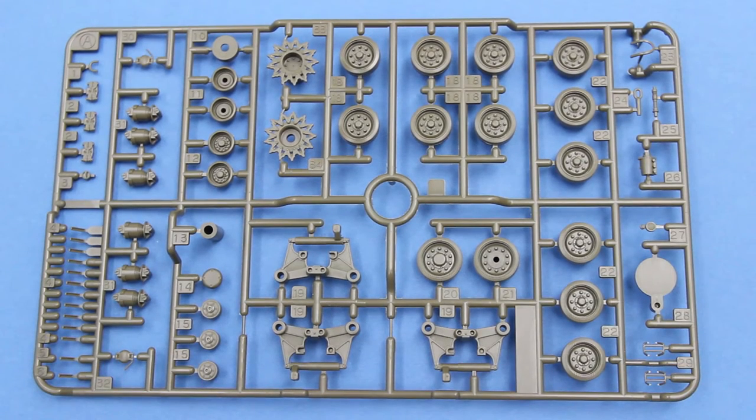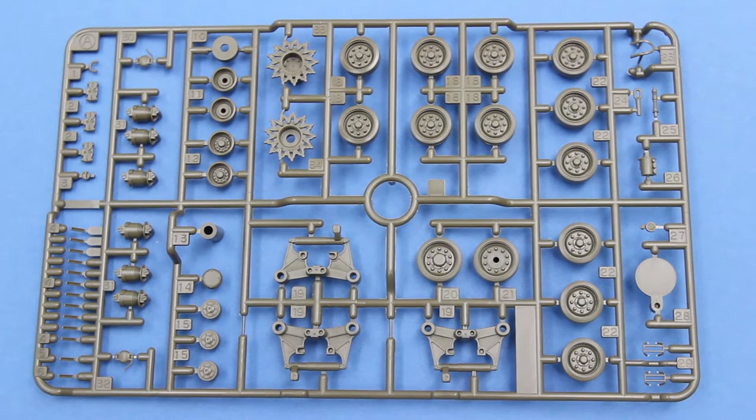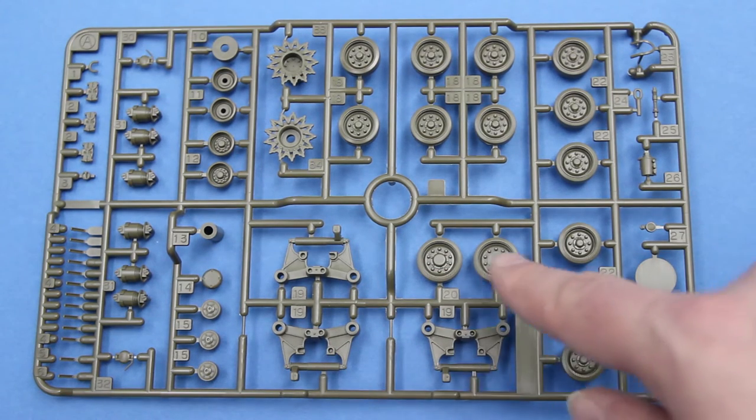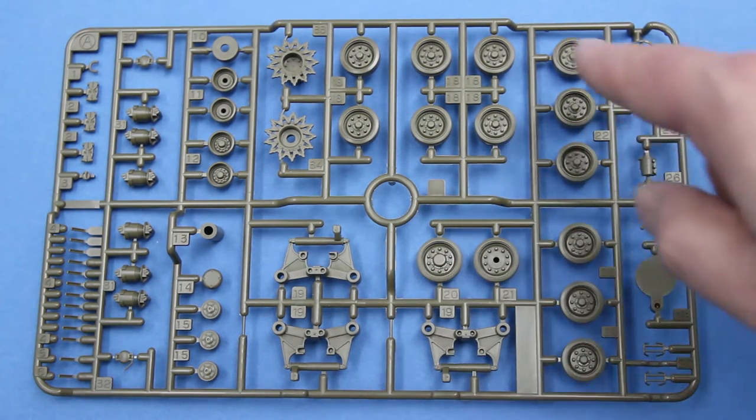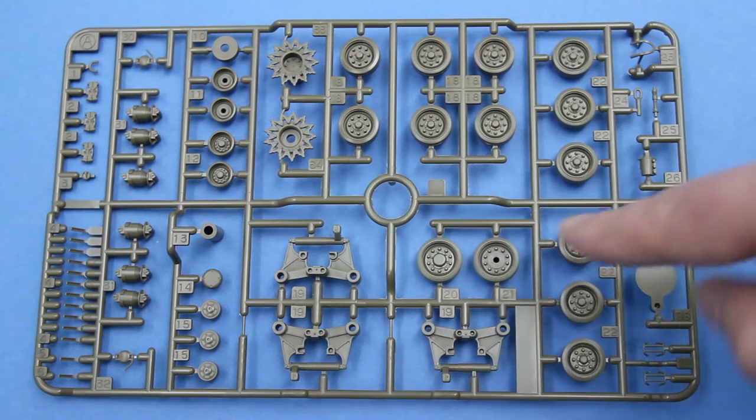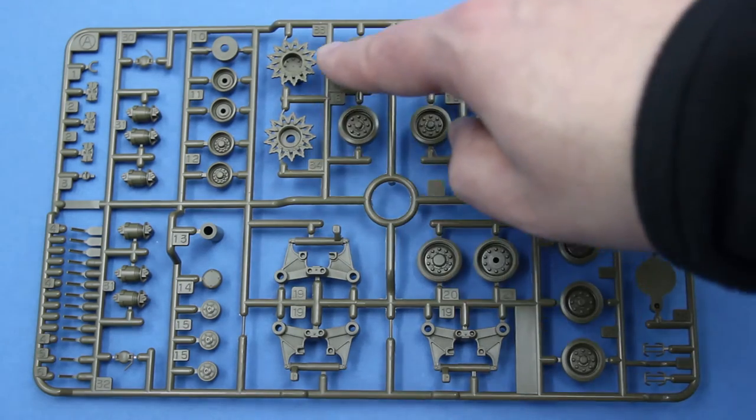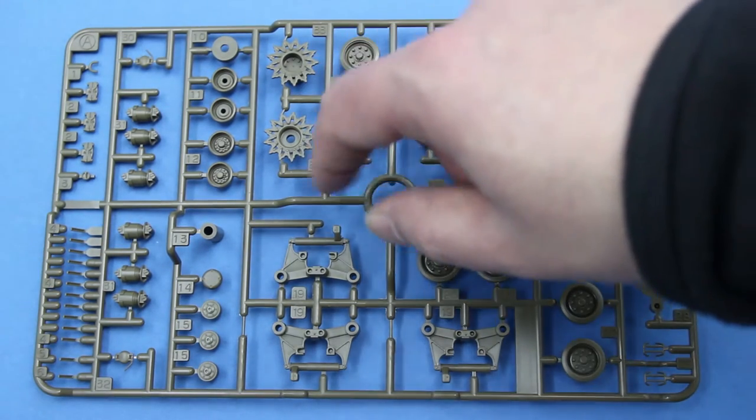So, looking at the sprues. First of all we get two identical sprues for here. The bogies. And the wheels. These are the road wheels. And the idler wheels. These are the sprockets. You only get this so called fancy type. These are the truck return rollers.